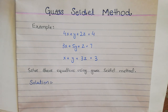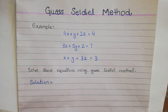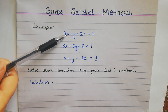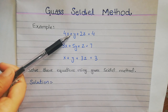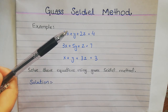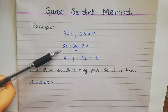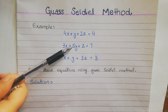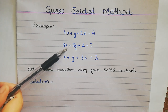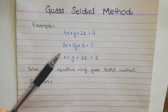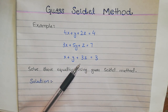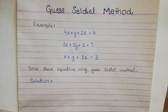Before we solve the example, I will tell you when the Gauss-Seidel method is used. In this particular example, if we look at the first equation, the coefficient of X is larger. In the second equation, the coefficient of Y is larger. In the third equation, the coefficient of Z is larger. This means that if the coefficient of a particular variable is greater than the remaining coefficients, then the chances of getting an answer using this method are higher.